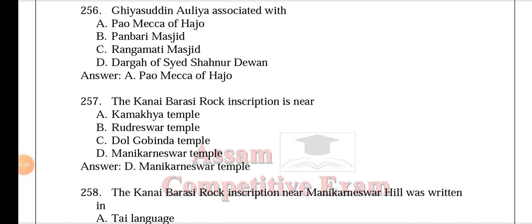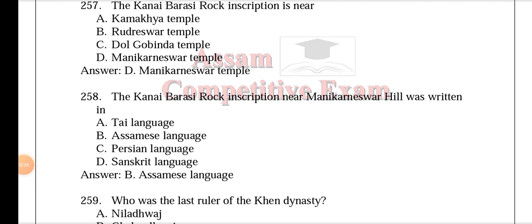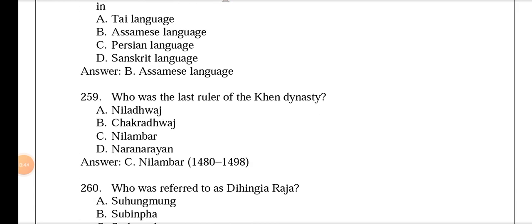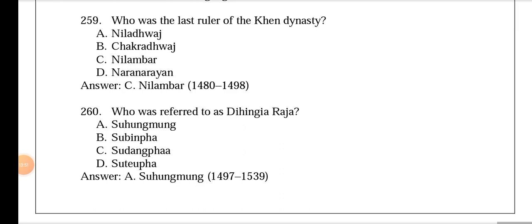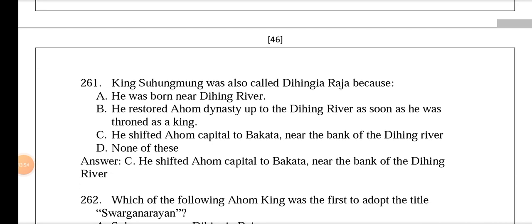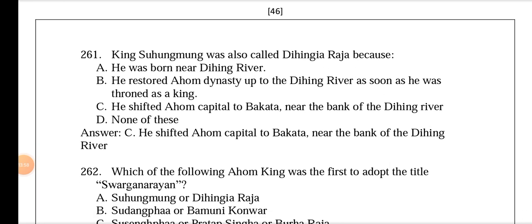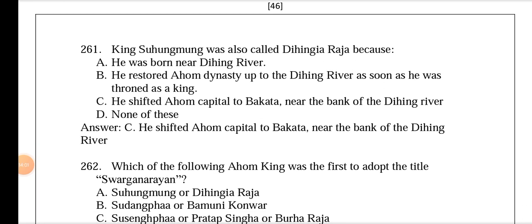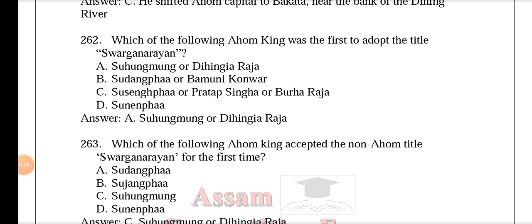The Kanai Barasi rock inscription is near Manikeshwar temple and was written in the Assamese language. The last ruler of the Khen dynasty was Nilambar. The Ahom king referred to as Dihingya Raja was Suhum Mong — a very important king in Ahom history. Suhum Mong was called Dihingya Raja because he shifted the Ahom capital to Bakkata near the bank of the Dihing River. Suhum Mong was also the first Ahom king to adopt the non-Ahom title of Swarga Narayan.